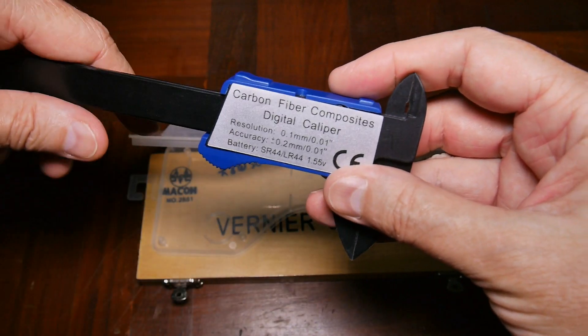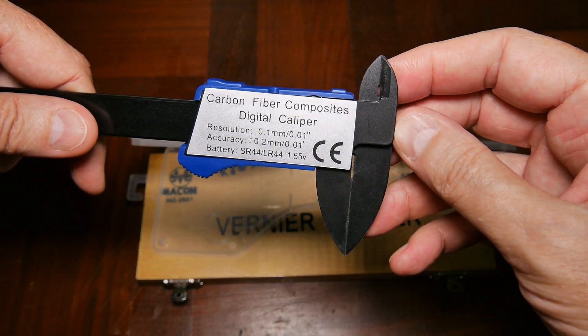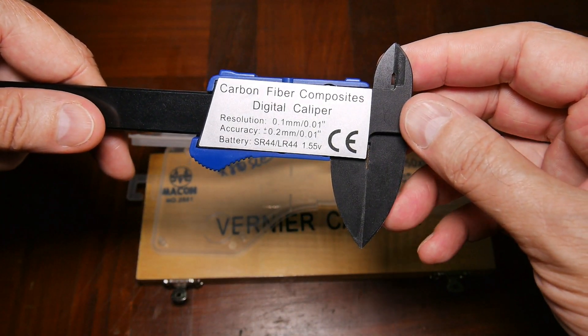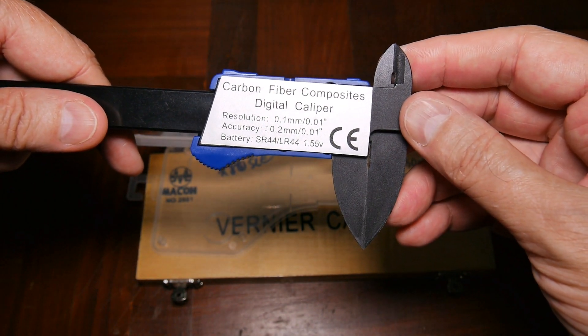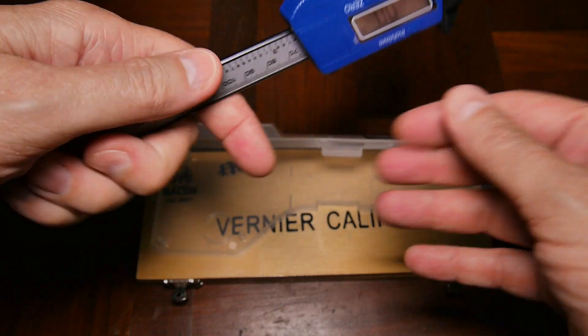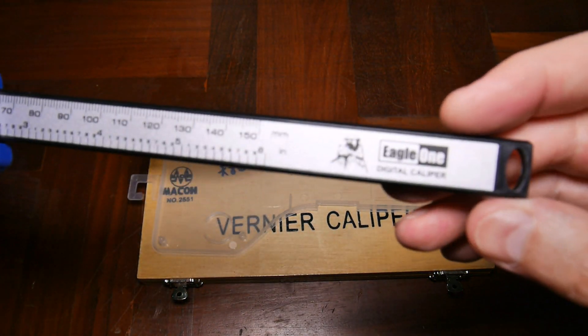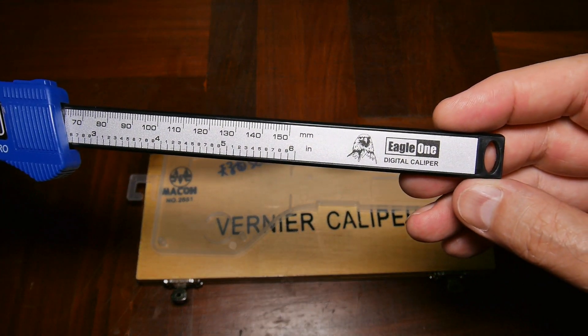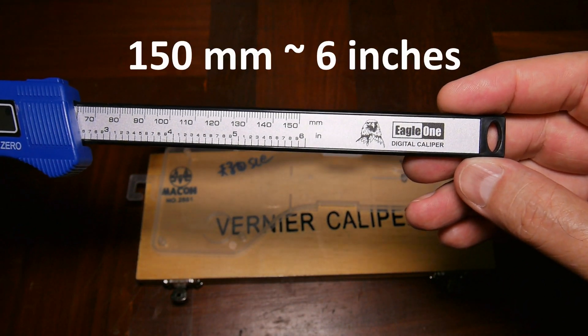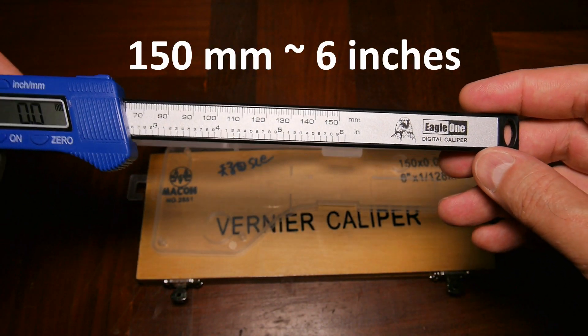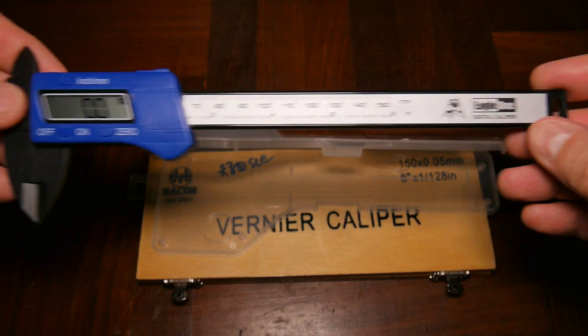Let's look at the backside of it. It says carbon fiber composites digital caliper, resolution 0.1 millimeters. That's fine. There's a battery listed. I guess we should take a look at the scale. It goes out to 150 millimeters or 15 centimeters. Not great, but again, for most of what I do around the house, more than adequate.